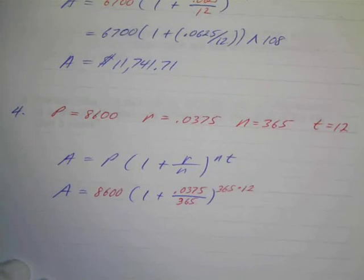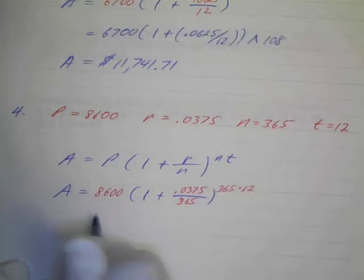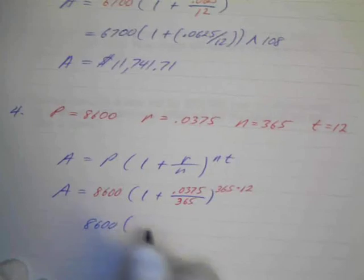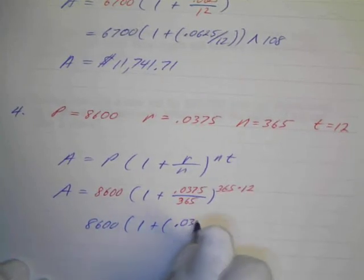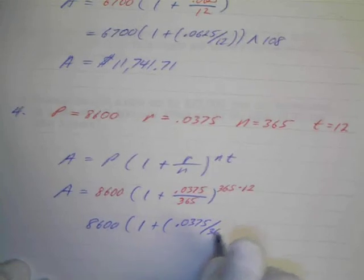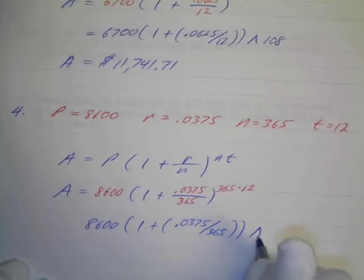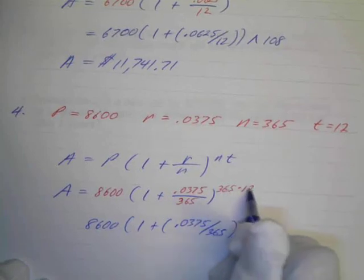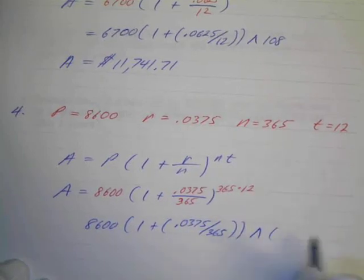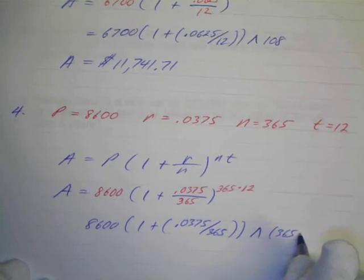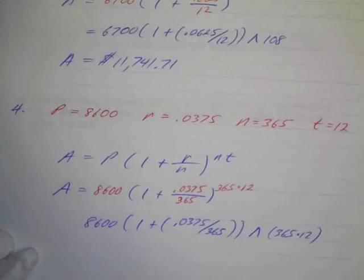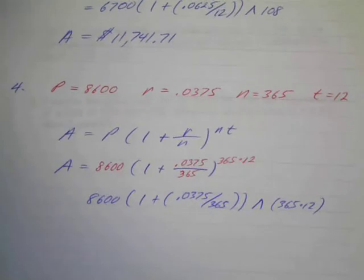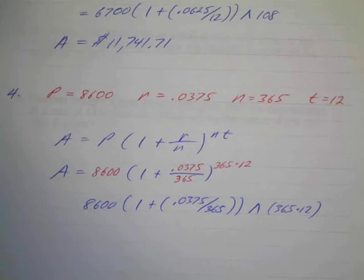So how am I going to put that in my calculator? Well, I'm going to have 8,600 parentheses 1 plus parentheses 0.0375 divided by 365 parentheses parentheses and I've got my caret. And then so I don't do these out of order, I'm going to put a parentheses around this. I'm going to have 365 times 12 like this. So when you're using your calculators, parentheses are just always played safe. Use more than less. It's going to pay off. All right. So let's put this in the calculator and see what we've got.